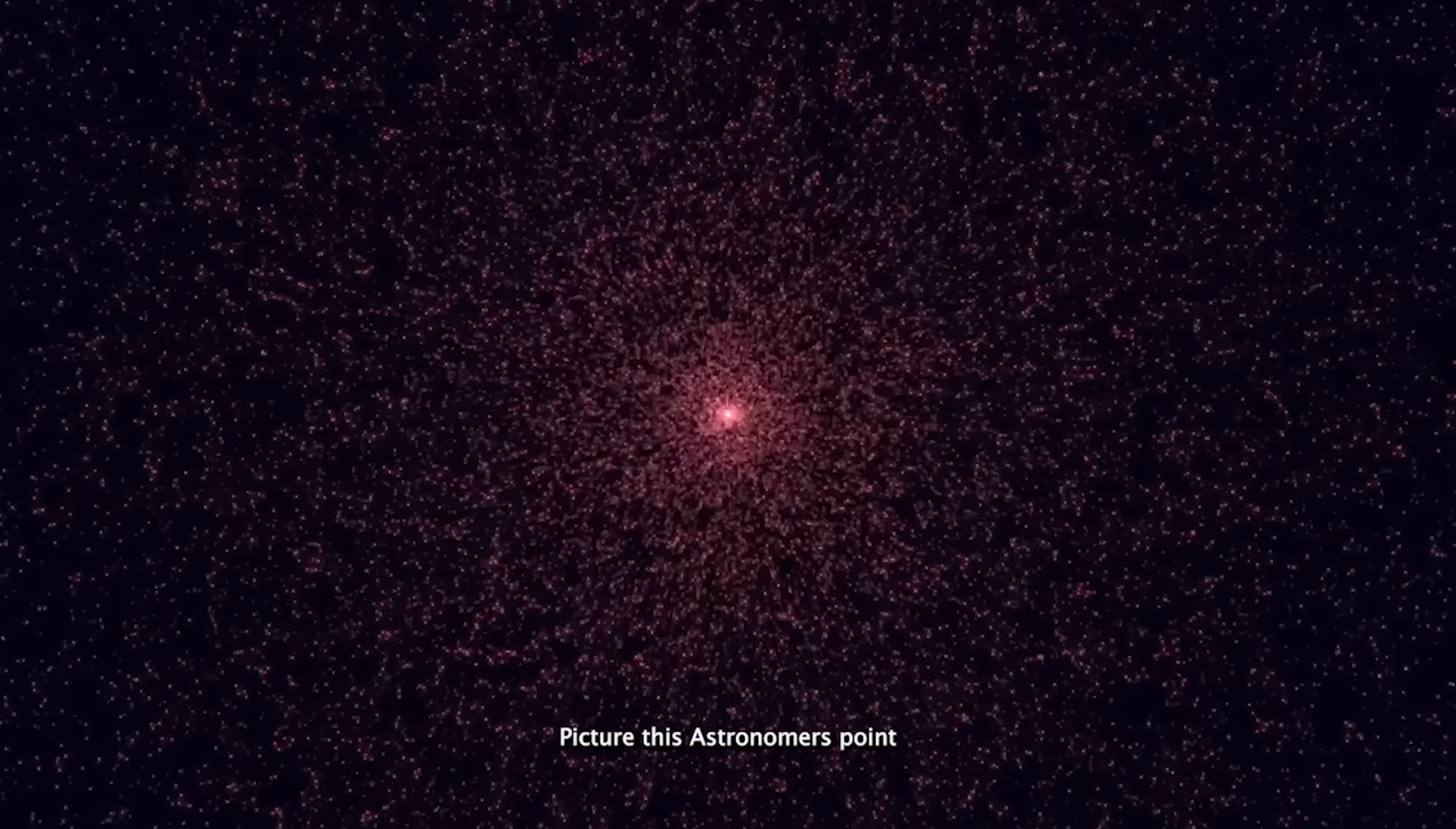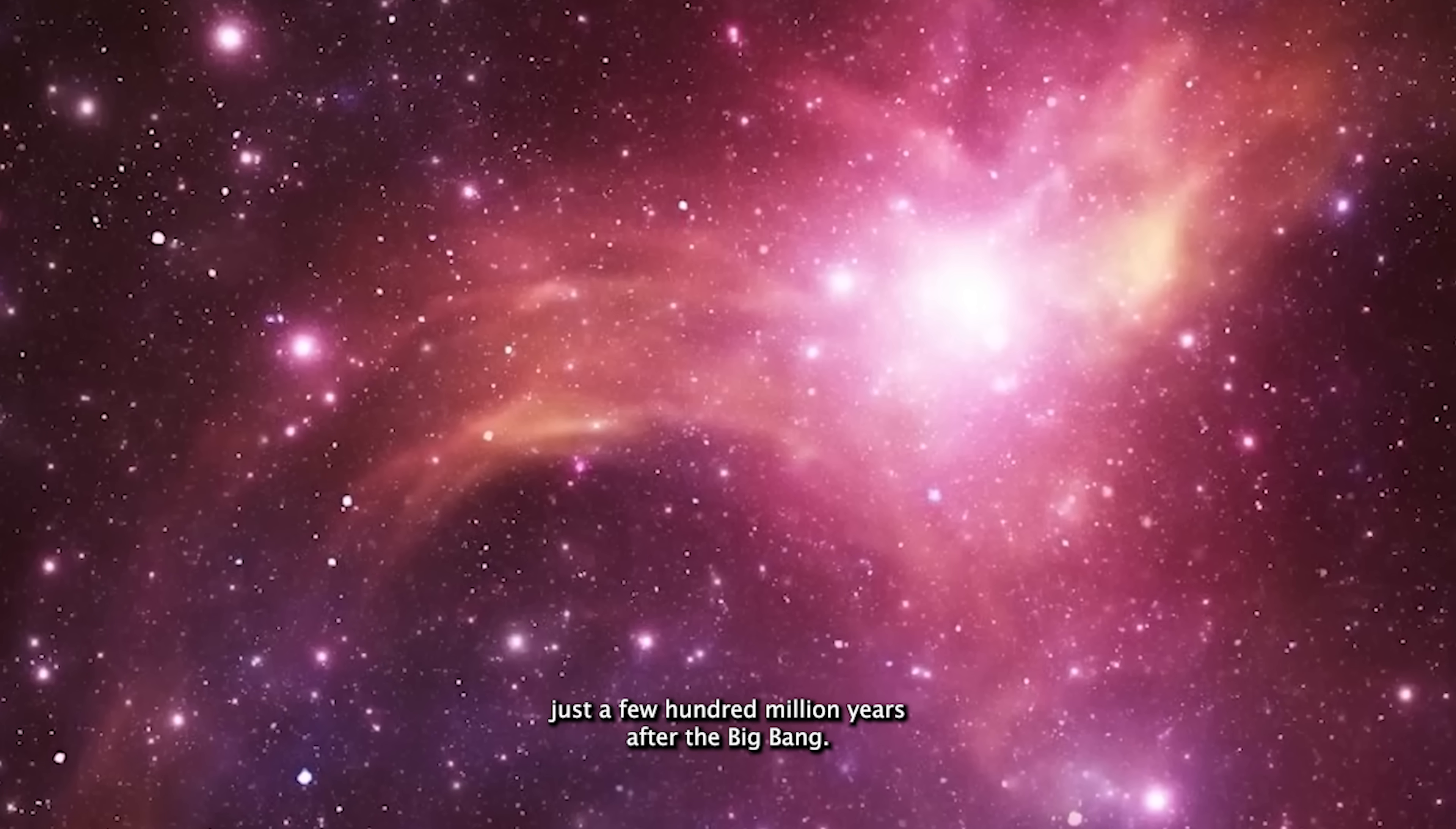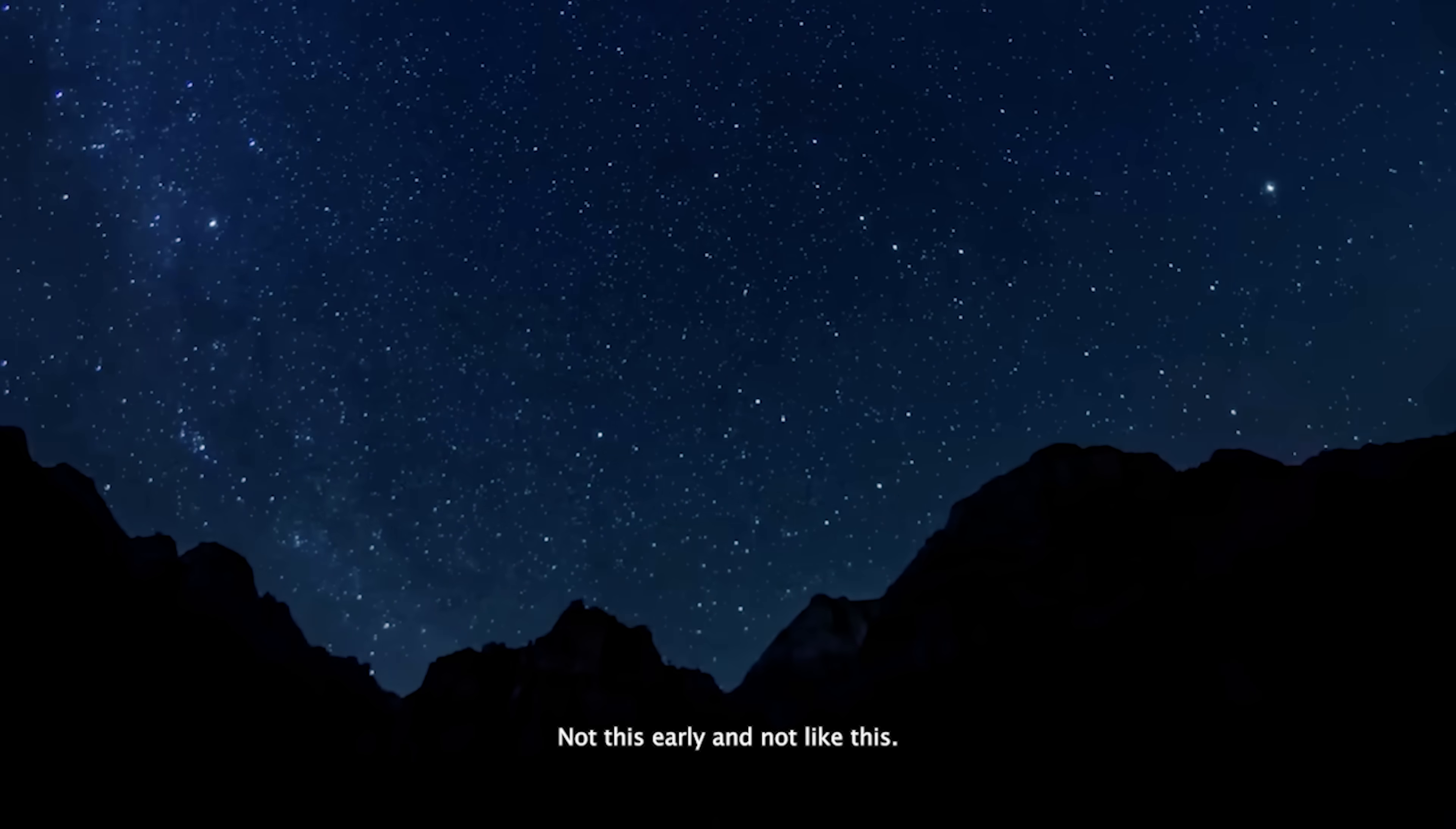Picture this. Astronomers point the Webb Telescope deep into the early universe, expecting to find faint glimmers of newborn stars and galaxies. Instead, they're hit with something shocking. Extremely bright objects lighting up the cosmos just a few hundred million years after the Big Bang. These glowing anomalies are too luminous, too massive, and far too developed to fit into our current understanding of cosmic evolution. They simply shouldn't be there. Not this early, and not like this.